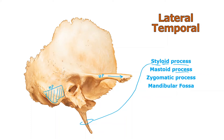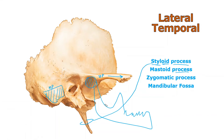The mandibular fossa is the shady area right under the zygomatic process. The mandible goes there — the back part of the mandible swings or hinges in that fossa, held in by musculature and other structures. It's called the mandibular fossa because the mandible, your lower jawbone, articulates there. The mandibular fossa is that shady area under the bridge that is the zygomatic process.